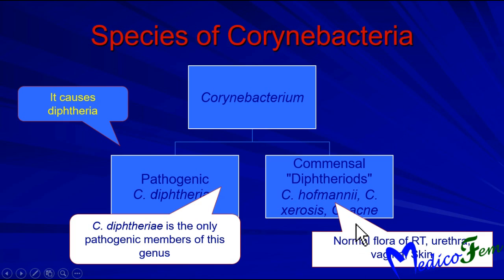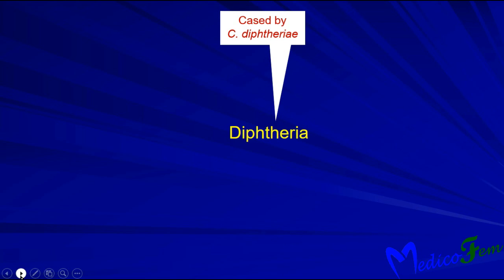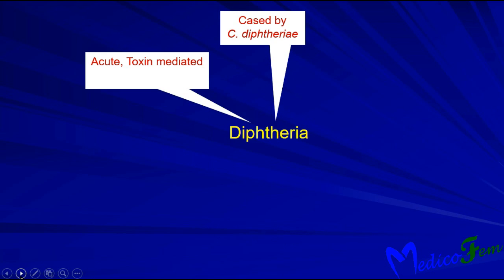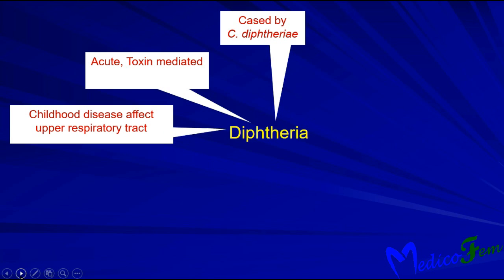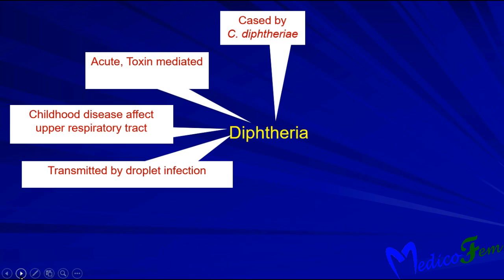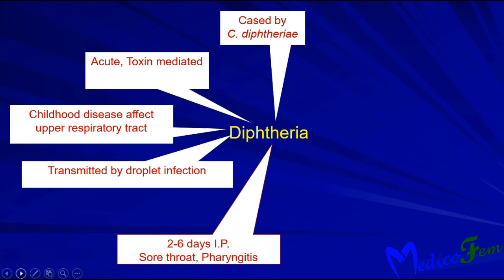Non-pathogenic Corynebacterium are normal flora of the respiratory tract, urethra, vagina, and skin. Diphtheria is a disease caused by Corynebacterium diphtheriae. It is an acute toxin-mediated disease mainly affecting children. The system affected is the upper respiratory tract. It is transmitted by droplet infection via the airborne route.